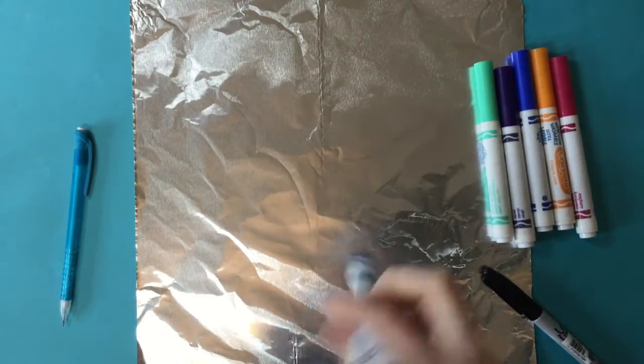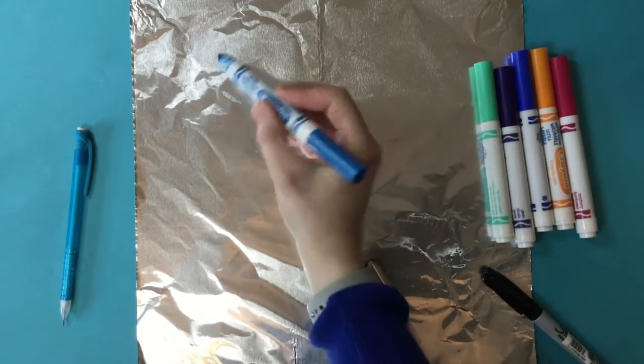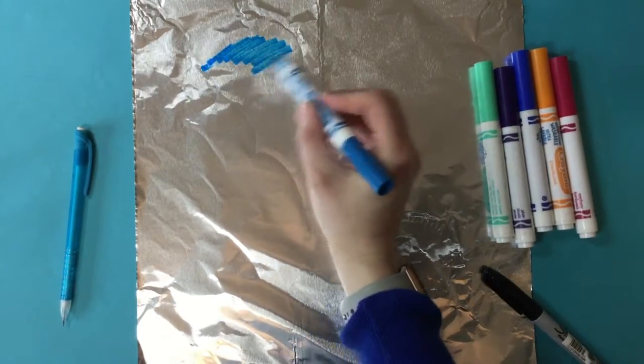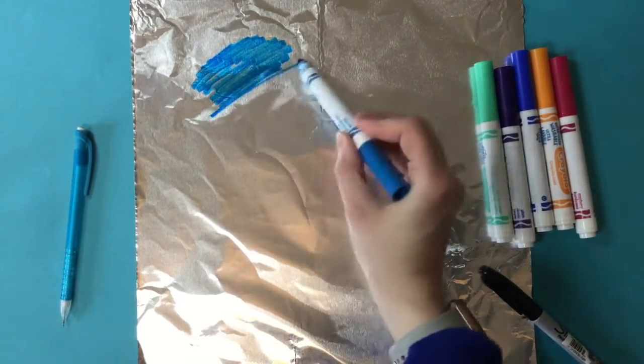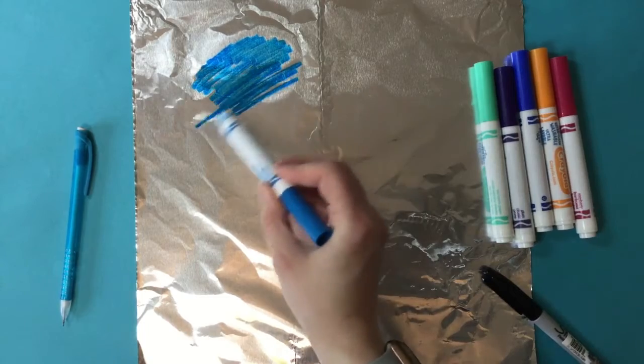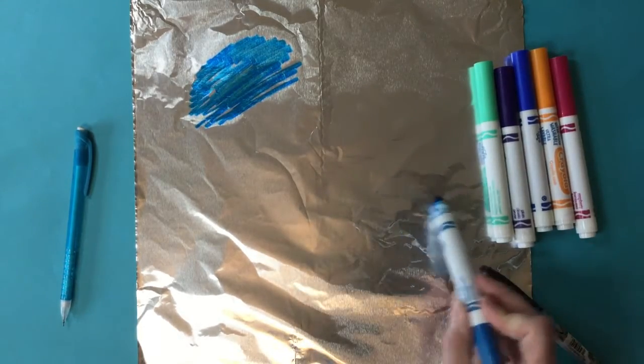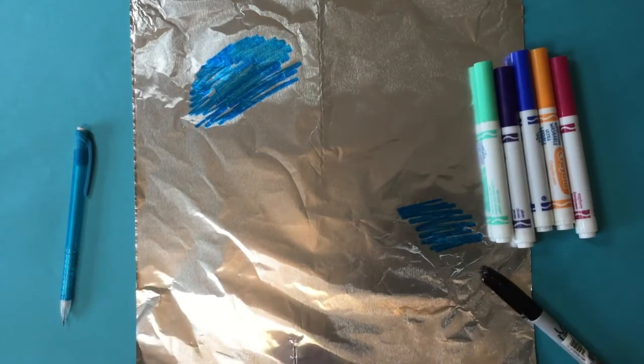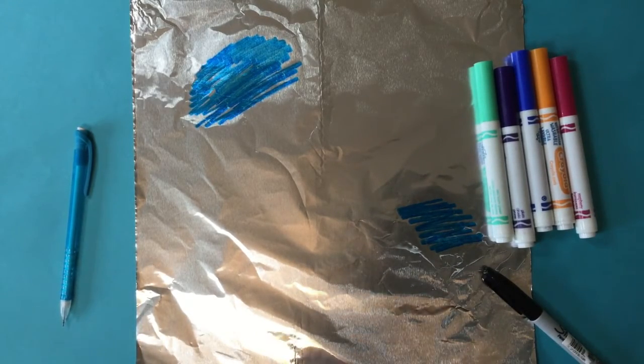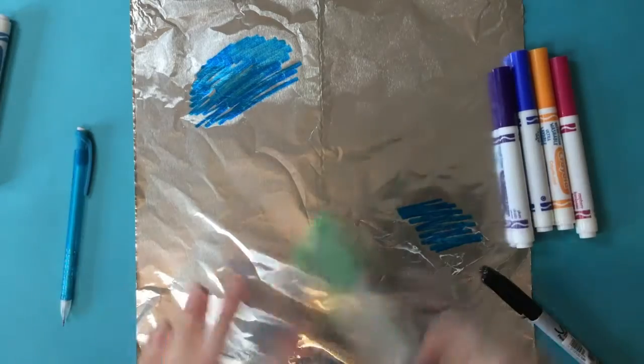You're going to take your washable markers and you're going to color your foil. You want to make sure that you cover the whole space where your paper will be. You can use any colors, any color scheme, and it really doesn't matter if you color inside the lines or in a scribbly way. You can color however you want, as messy as you want.